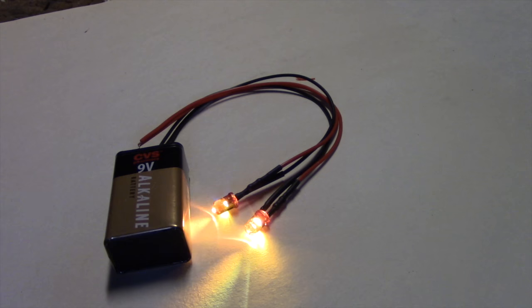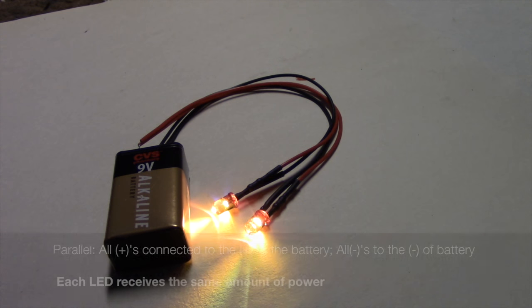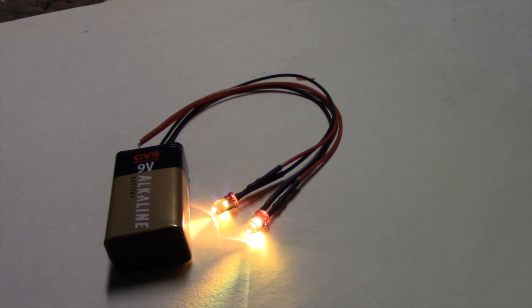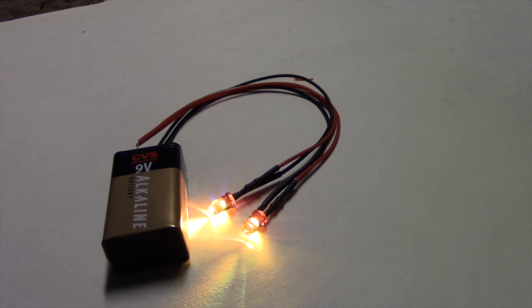Here we now have the LEDs wired up in parallel, and basically what this means is we're taking all the positive electrodes hooking them together and hooking that into the positive of the battery, and same thing with the negative. The biggest difference is that rather than dividing the power as we saw with the series, each of these LEDs now is receiving the same amount of voltage from the power source.